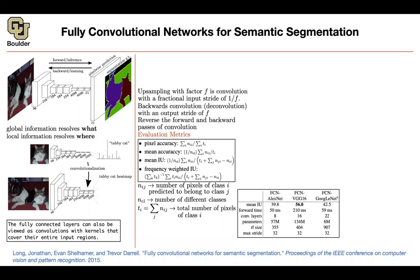You can have different backbones: AlexNet, VGG16, and GoogleNet. We are doing transfer learning — cutting the network at some point right after the last layer and learning the rest, doing fine-tuning on AlexNet learned on ImageNet. Comparing mean intersection over union, VGG16 does the best, but when you look at the forward time, it's not as efficient as the other two. RF stands for receptive field — I'll give you a precise definition in future slides.